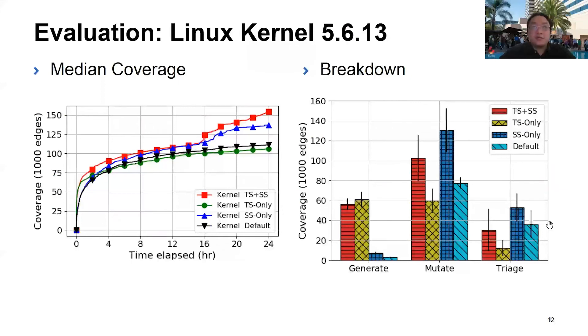So we ran SysVegas and Syzkaller on Linux kernel 5.6.13 for 24 hours. The figure on the left shows the coverage achieved. We observe that with SysVegas seed selection, coverage is significantly improved over vanilla Syzkaller. If we add in task selection, the coverage is even better.